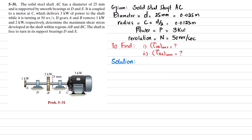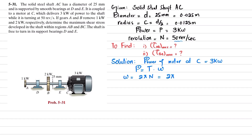Since we are given the power of the motor at C is 3 kilowatts, and it is rotating at 50 revolutions per second, we know that power is equal to torque times angular velocity. Angular velocity is equal to 2π×n, so 2π × 50 revolutions per second, which we convert to radians per second.